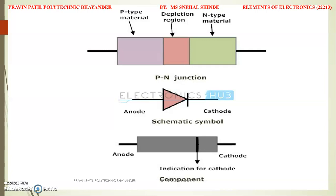Therefore, this region is called the depletion region. Practically, the width of the depletion region is 0.5 to 1 micrometer — very small compared to the P-N regions. This region is also known as the space charge region. In the state of equilibrium, the depletion region gets widened to such an extent that electrons cannot cross the junction anymore.